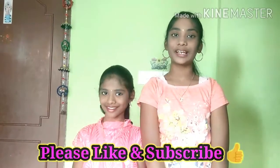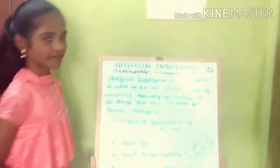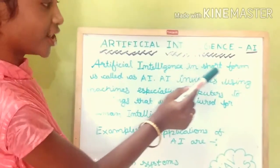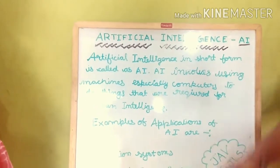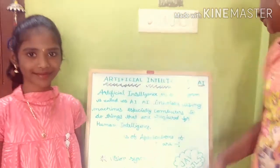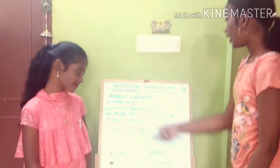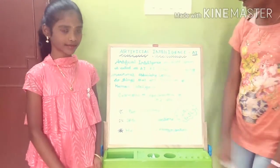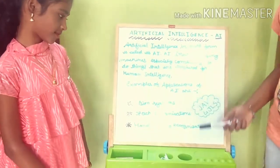Today we are going to speak about Artificial Intelligence and tools developed by Google. Artificial Intelligence, in short form, is called AI. AI involves using machines, especially computers, to do things that are required for human intelligence. Examples of applications of AI are vision systems, speech recognition, and handwriting recognition.